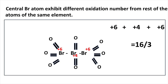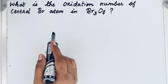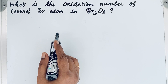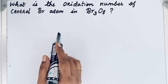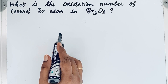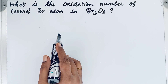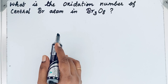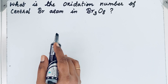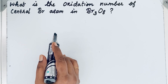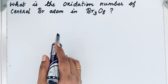Welcome to Aurora Chemistry for Everyone. Let us see how to find the oxidation number of the central bromine atom in Br₃O₈. Oxidation numbers help us to know whether the atom gains or loses electrons during a chemical reaction.